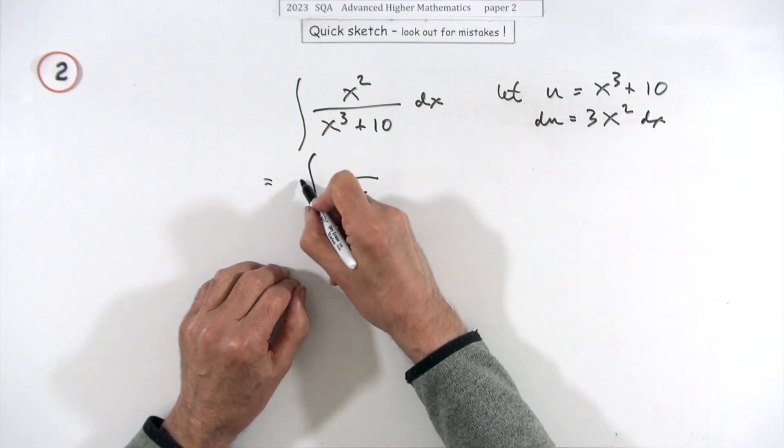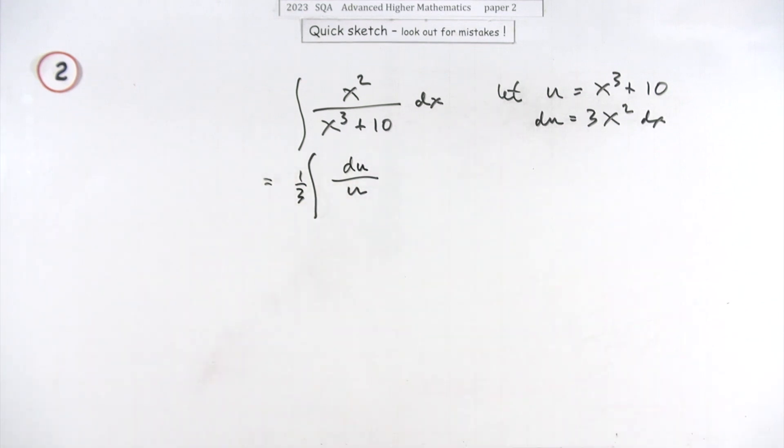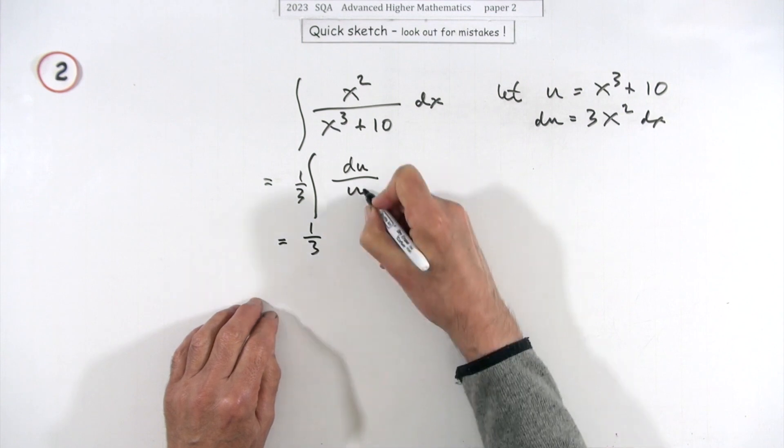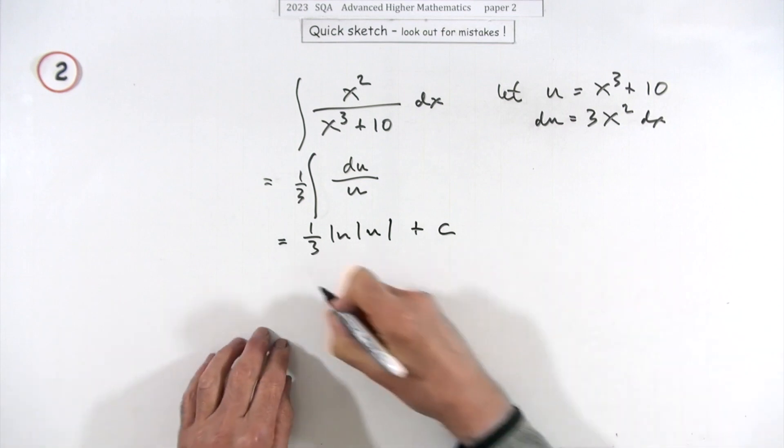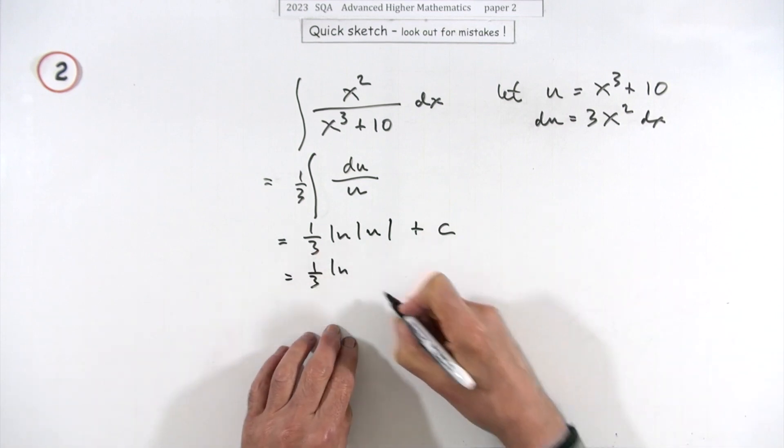That's one third of - that's a log, ln of u plus c. So one third of the natural logarithm of